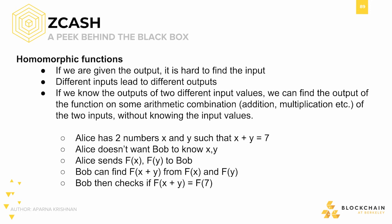Here's a simple way to grasp homomorphic encryption. Say Alice has two numbers x and y such that x plus y is 7. Alice doesn't want Bob to know x and y, but she wants to prove to Bob that x plus y is 7. Alice sends f(x) and f(y) to Bob, where f is a homomorphic function. Bob can then find f(x + y) from f(x) and f(y), since f is homomorphic. Then Bob can check if f(x + y) is equal to f(7), verifying the fact that x plus y is indeed equal to 7. That's at a very high level how some of the math works behind Zcash — Alice doesn't reveal the values of x and y, but Bob can verify that those two values combined equal some output value.